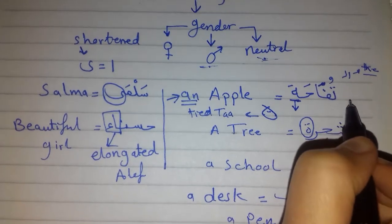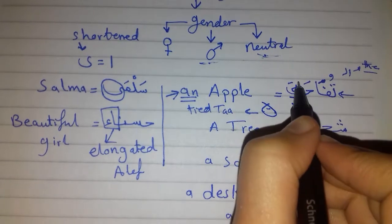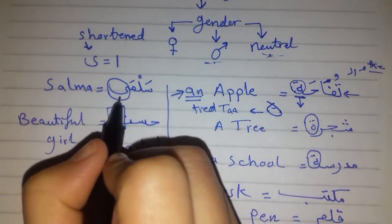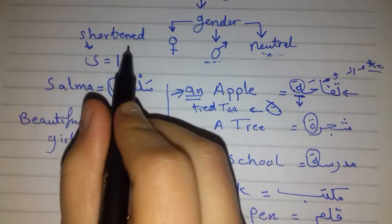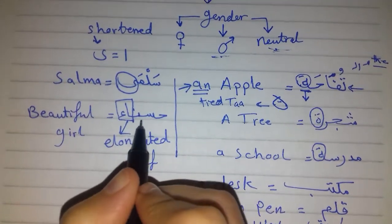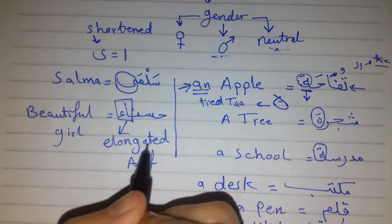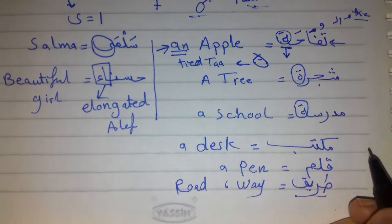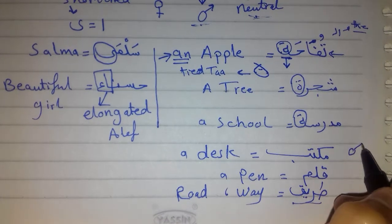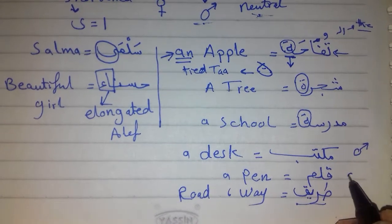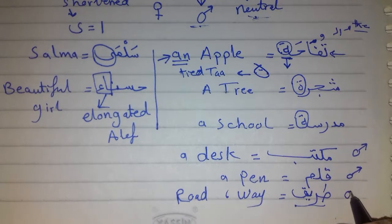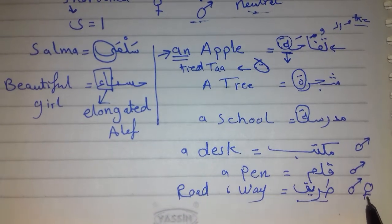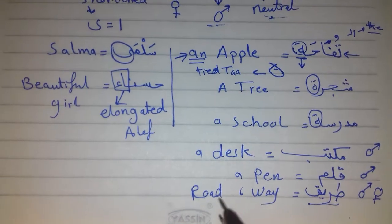So, for example, here we have tufaha. The first sign is ta. We have Salma - the second sign is al-alif al-maqsura, or shortened alif. Then we have hasna - al-alif al-mamdooda, elongated alif, alif then Hamza. And we have here masculine words like maktab and qalam, and neutral words like tariq, which can be feminine or masculine.